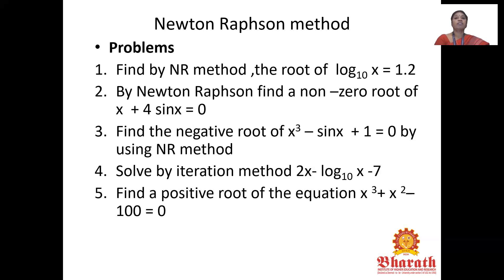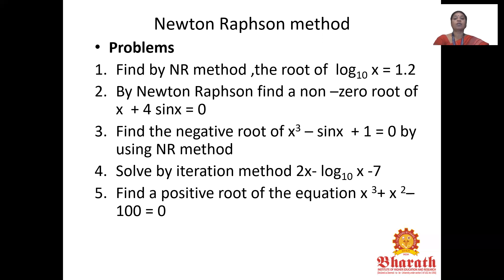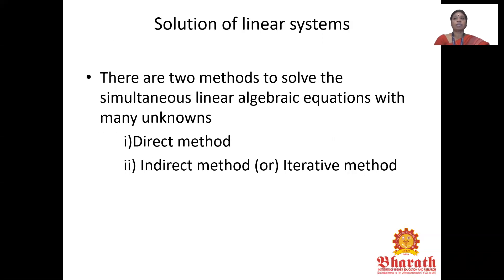Additional problems include: find by Newton-Raphson Method the root of log_N(x) = 1.2; find the non-zero root of x + 4sin(x) = 0; find the negative root of x³ − sin(x) + 1 = 0; solve by iteration method 2x − log₁₀(x) = 7; and find the positive root of x³ + x² − 100 = 0. With this, the Newton-Raphson Method section is complete.